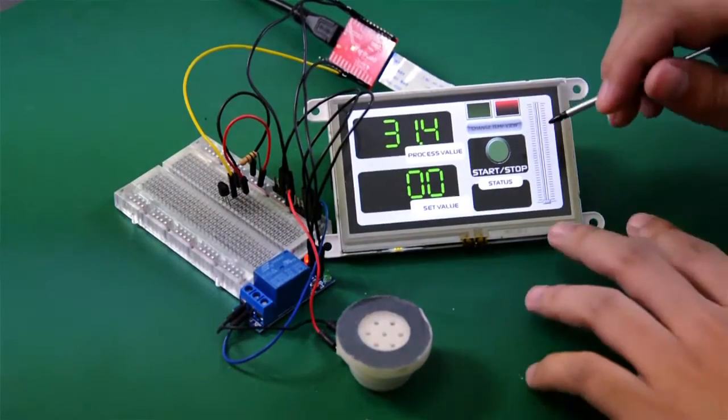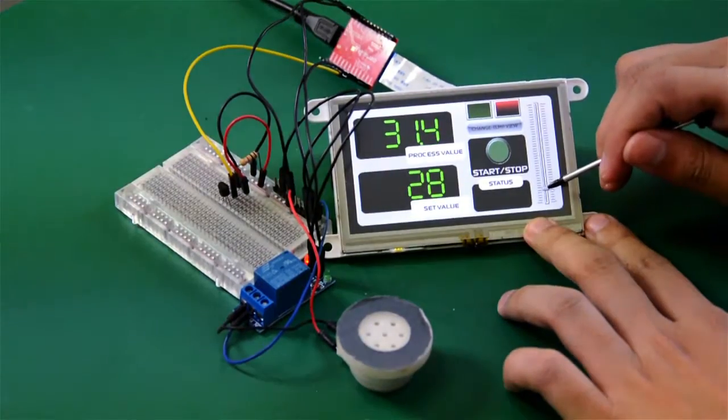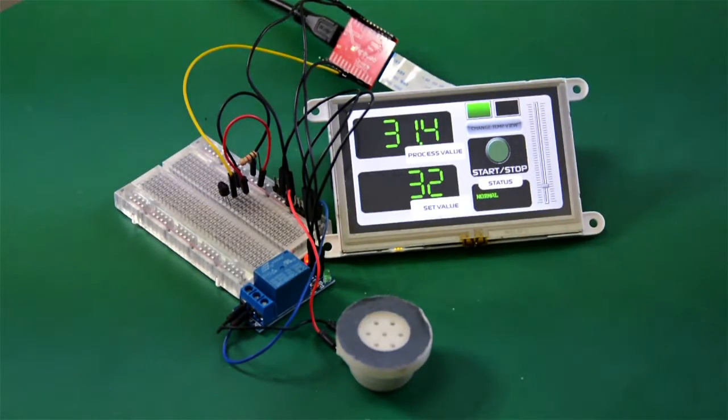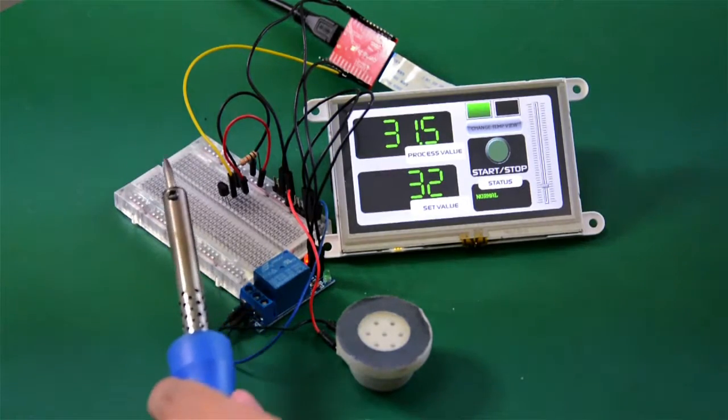For the next demo, we set an alarm or set value to 32 degrees Celsius. Now, we will then use a soldering iron to increase the temperature to 32 degrees Celsius.